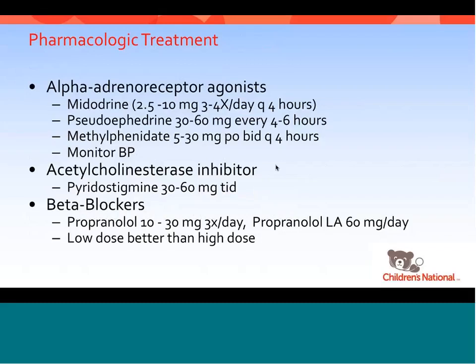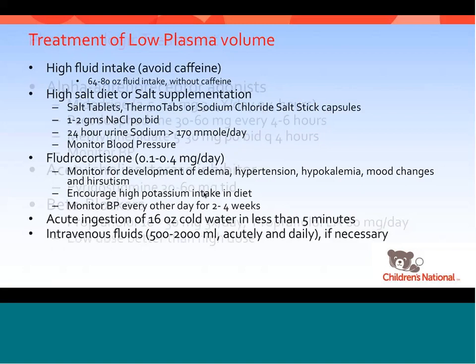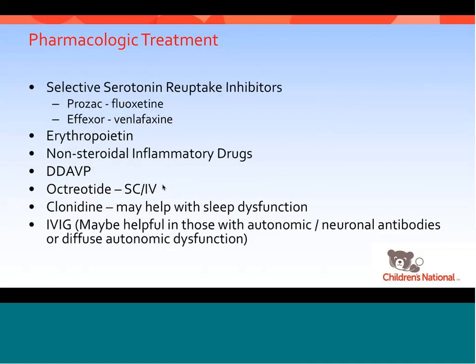If that's not successful, we may try alpha-adrenergic therapy using midodrine, pseudoephedrine, or methylphenidate — used both for its vasoconstrictor effect and its effect on cognition. We may use an acetylcholinesterase inhibitor, mestinon (pyridostigmine). Some studies suggest beta-blockers can be helpful, with a lower dose being better than a higher dose, though results are mixed — at least 25% of patients are actually worse on beta-blockers. Selective serotonin reuptake inhibitors can also be effective. We've occasionally used DDAVP, and in about 10 patients we've treated with octreotide, another vasoconstrictor.